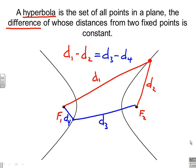Any points on the hyperbola, the difference of the distances between those points is constant, between the fixed points is constant. Let's look at one specific point.